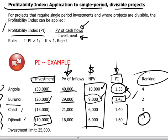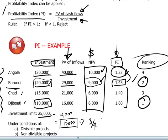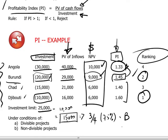Djibouti is number one and requires $10,000. In this example, we have $25,000 available. So if we put $10,000 into Djibouti, we're left with $15,000. The number two investment would be Burundi, which requires $20,000. We don't have enough to do the entire investment, but if it is a divisible project, we could invest in three quarters — 75% — of project Burundi in order to maximize our net present values.